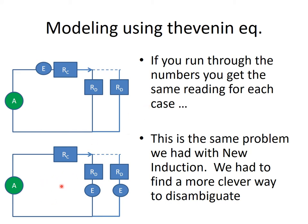Down here is the new electromagnetism version where the EMF is generated in the discs. Again you run it once with one disc and then model it again with two discs connected in parallel. When you run the numbers you get exactly identical answers — in other words, from an ammeter out here you can't tell the difference between one disc on and two discs on. You cannot tell where the EMF is generated from a meter out here.